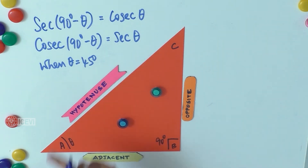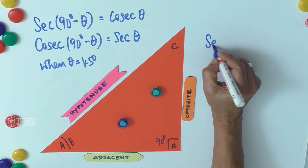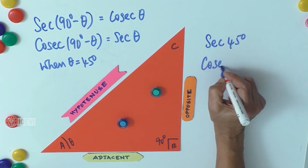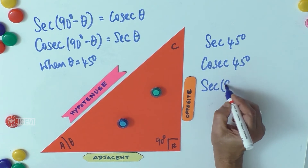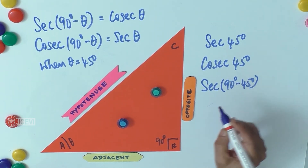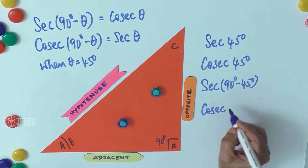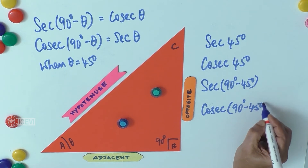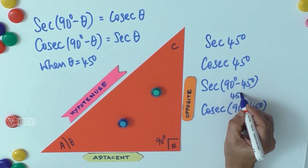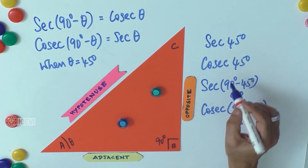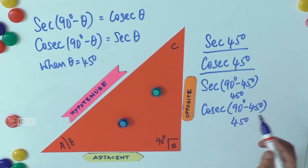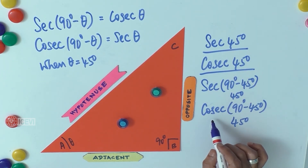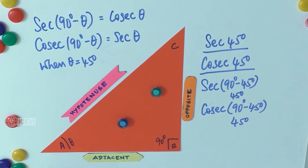Since the reference angle is 45 degrees, we have to find sec 45°, csc 45°, and then sec(90° - 45°) and csc(90° - 45°), which both become 45 degrees again. So it is enough if we simply find csc 45° and sec 45°, which is nothing but sec(90° - 45°) and csc(90° - 45°).